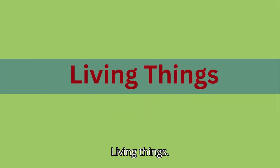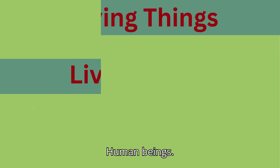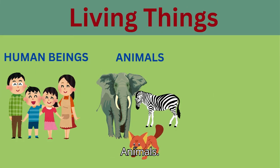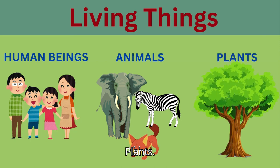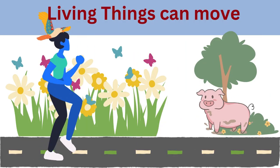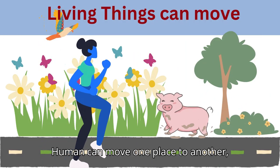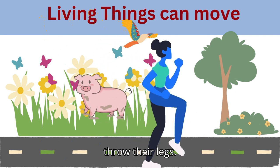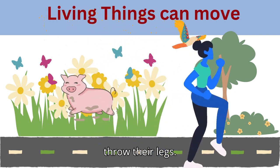Living things include human beings, animals, and plants. Humans can move from one place to another through their legs.